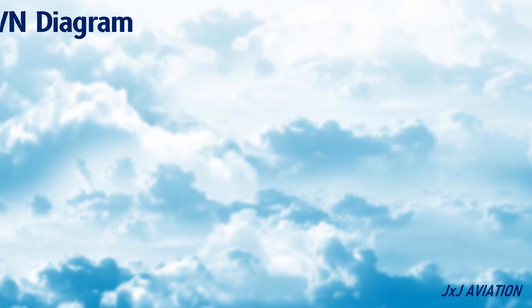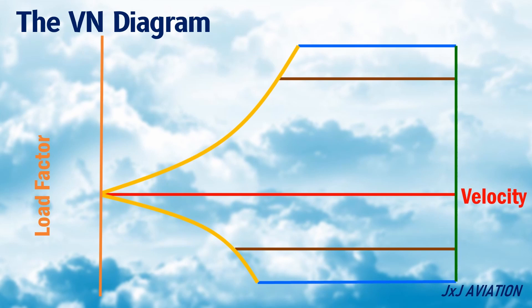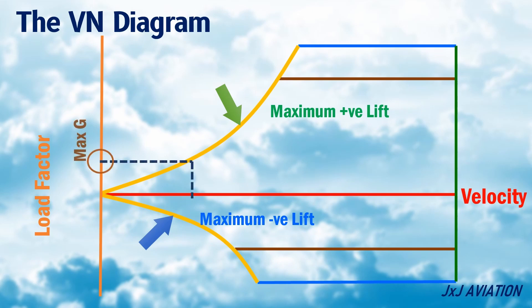The VN diagram. These curved lines are the maximum positive and negative lift capabilities of the aircraft. For a particular aircraft speed, the load factor cannot be more than this G value because the aircraft will stall.